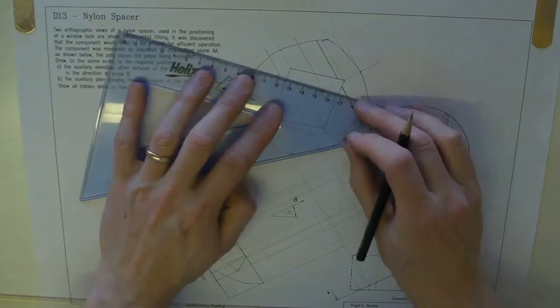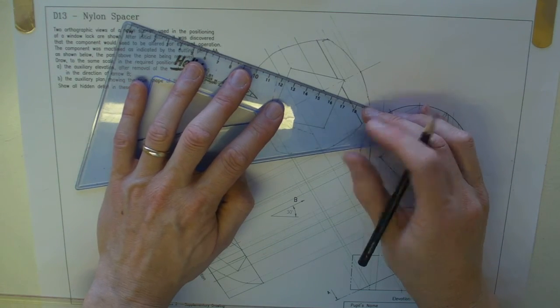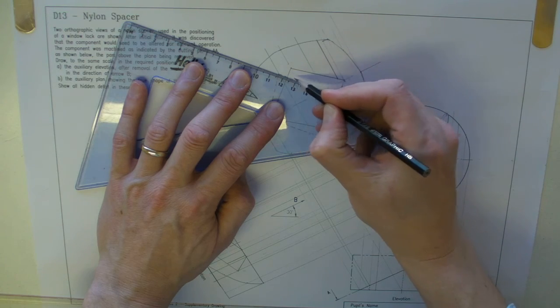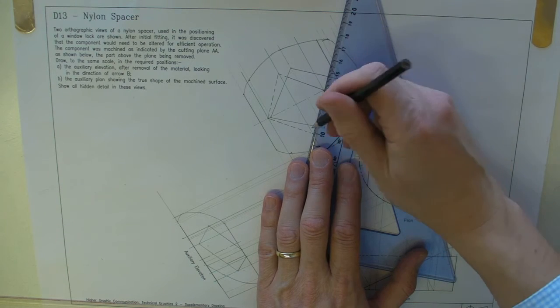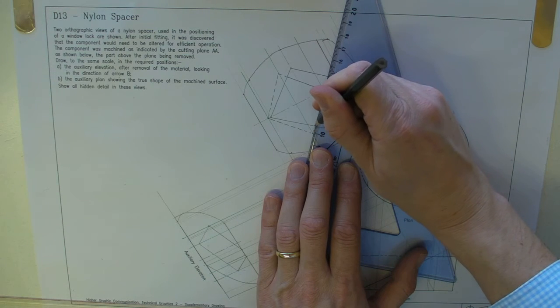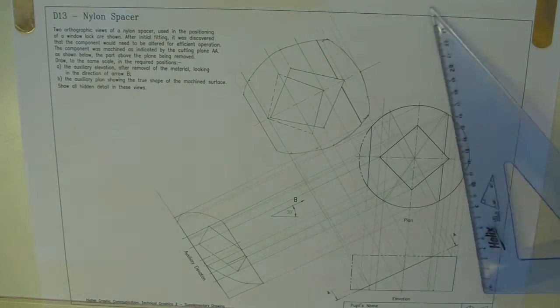So as this comes into view through the hole, it's going to be hidden there and then seen to there. Hidden here and seen right up to there.